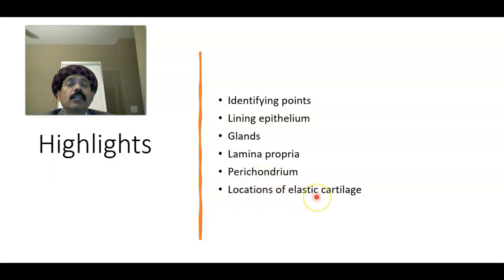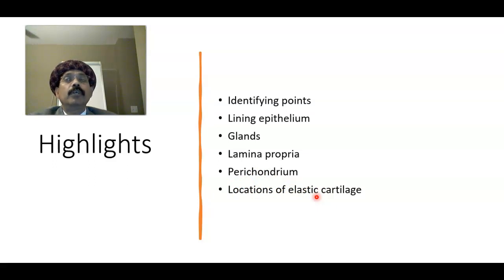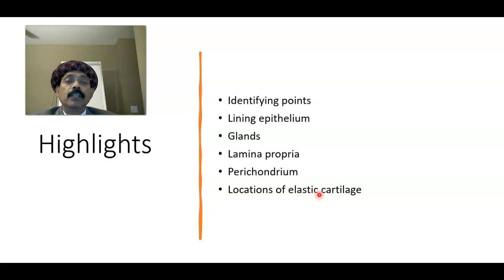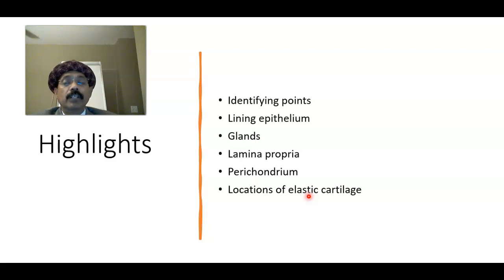Location of elastic cartilage — what are the locations? One is the epiglottis. Another is the eustachian tube. Another is the external ear. We can also add the cuneiform cartilage of the larynx, which is also an elastic cartilage.